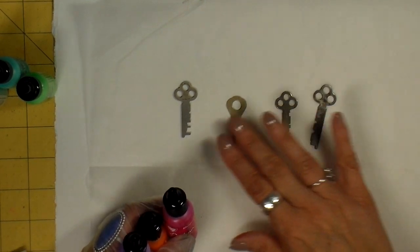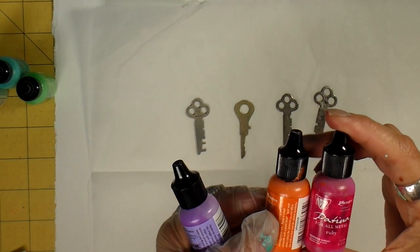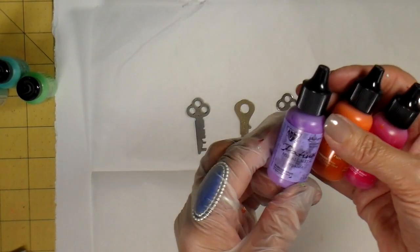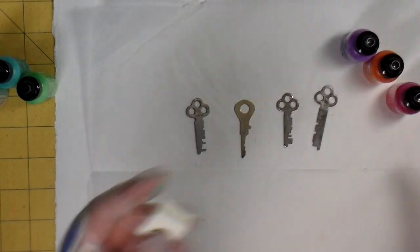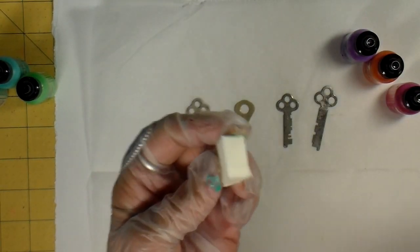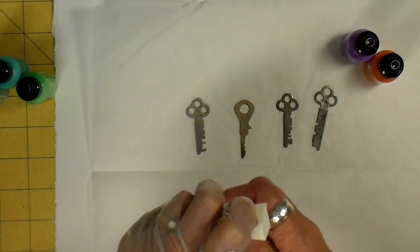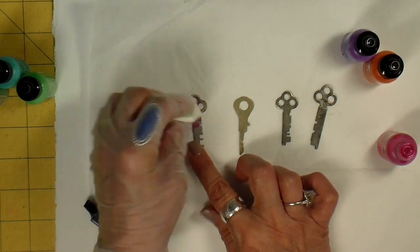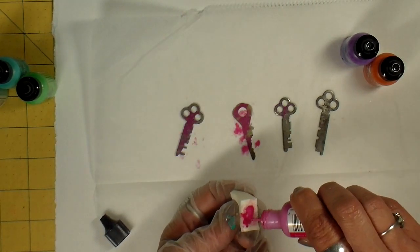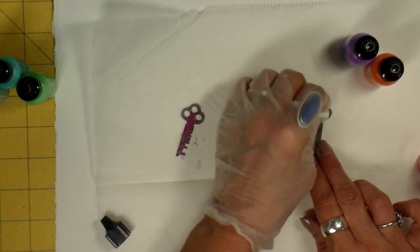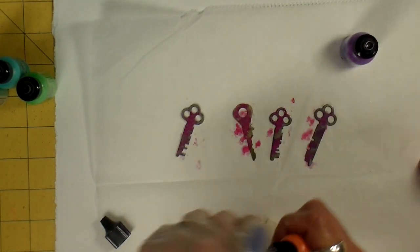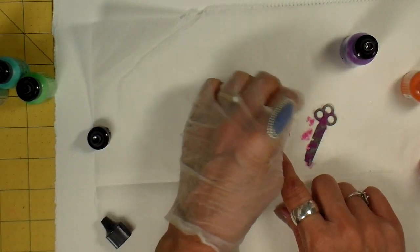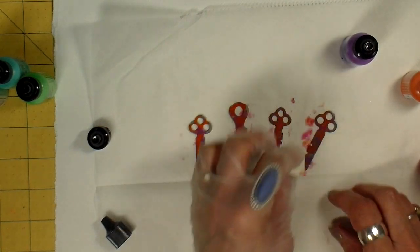The first step in making the keys is to add the color. I'm using the patinas by Ranger, the patinas for metal. I'm using ruby, rust, and the color opalite. I use a little makeup sponge. I like to start with one of the colors by putting a couple dots on my sponge, and then just dotting it onto the key, leaving some spaces, and then adding another color. These paints are very opaque and cover really well.